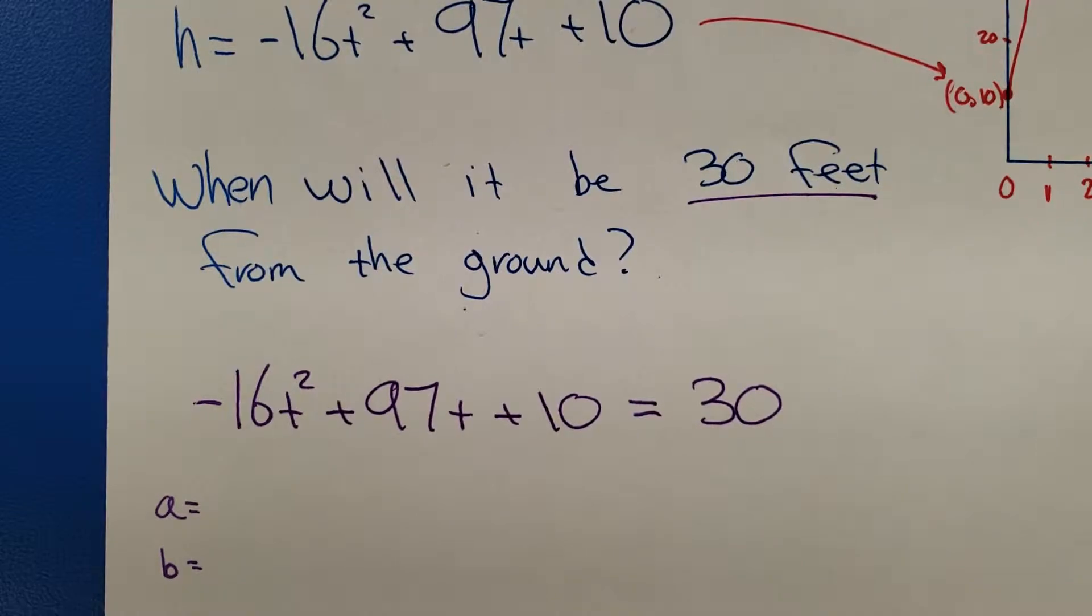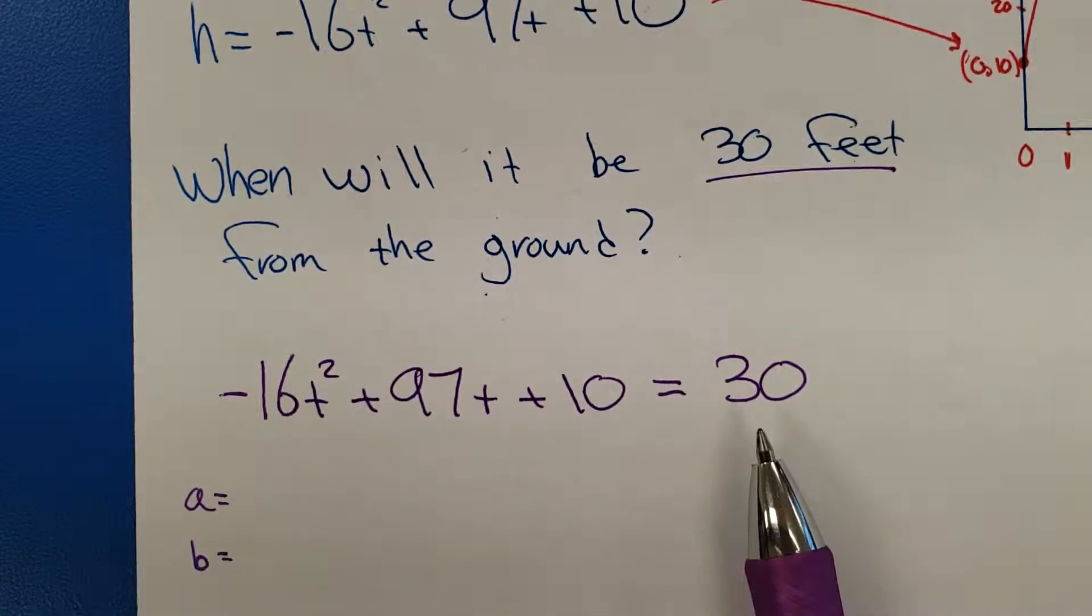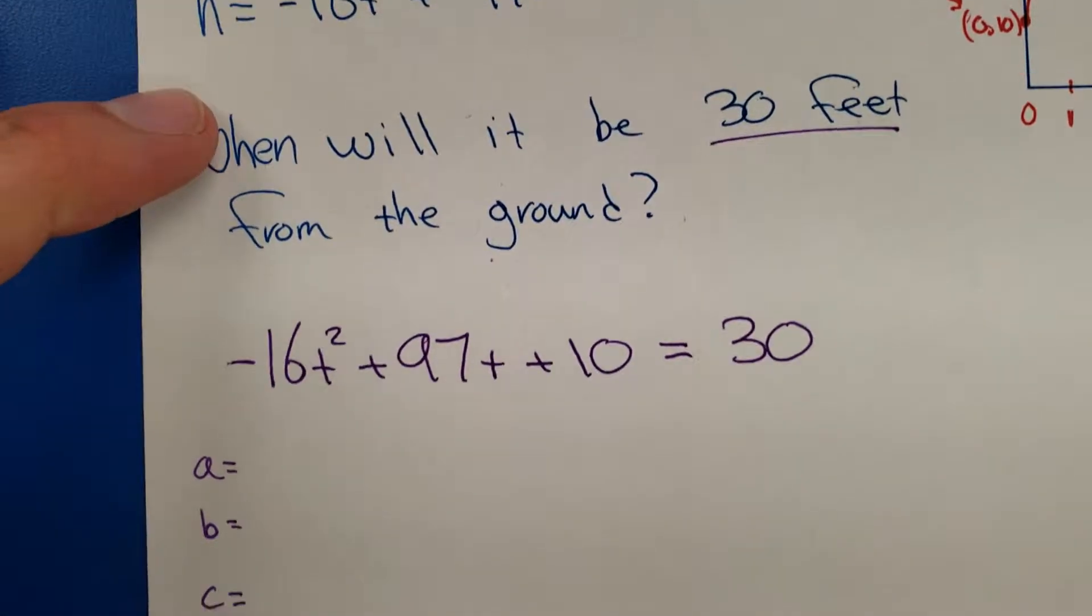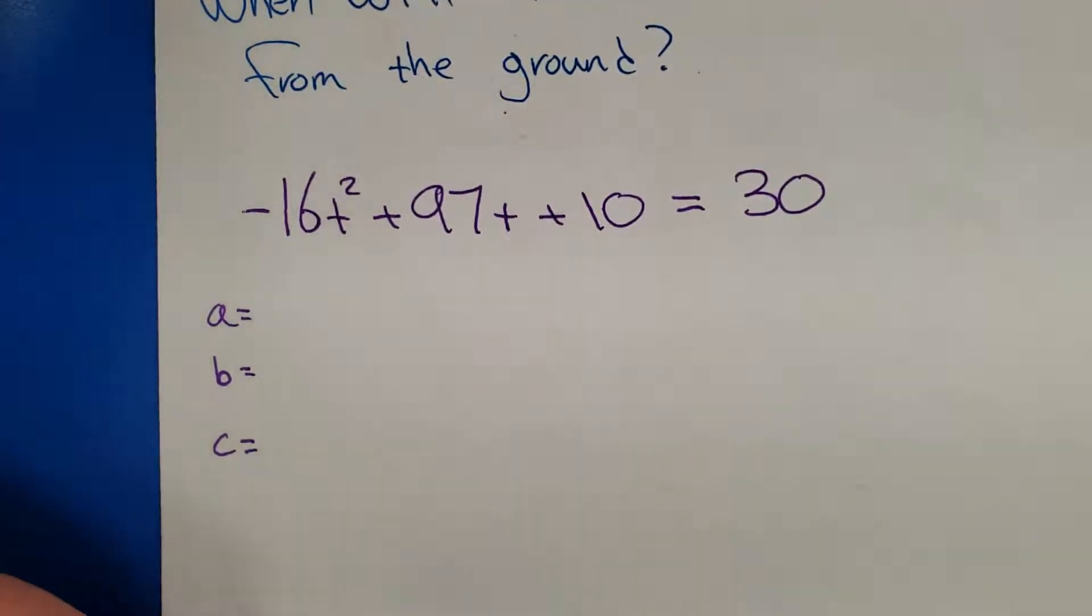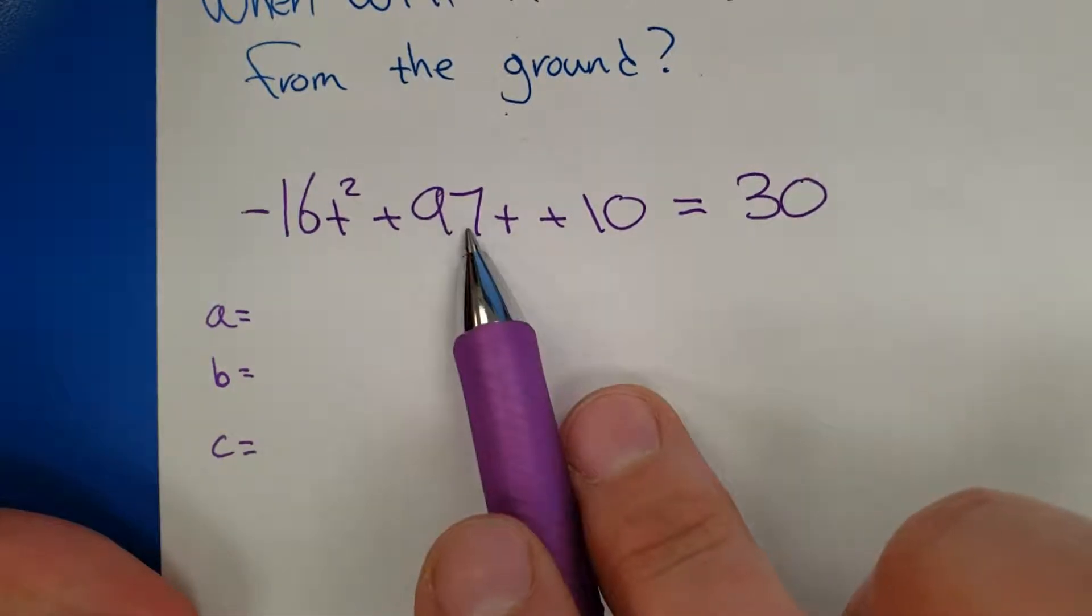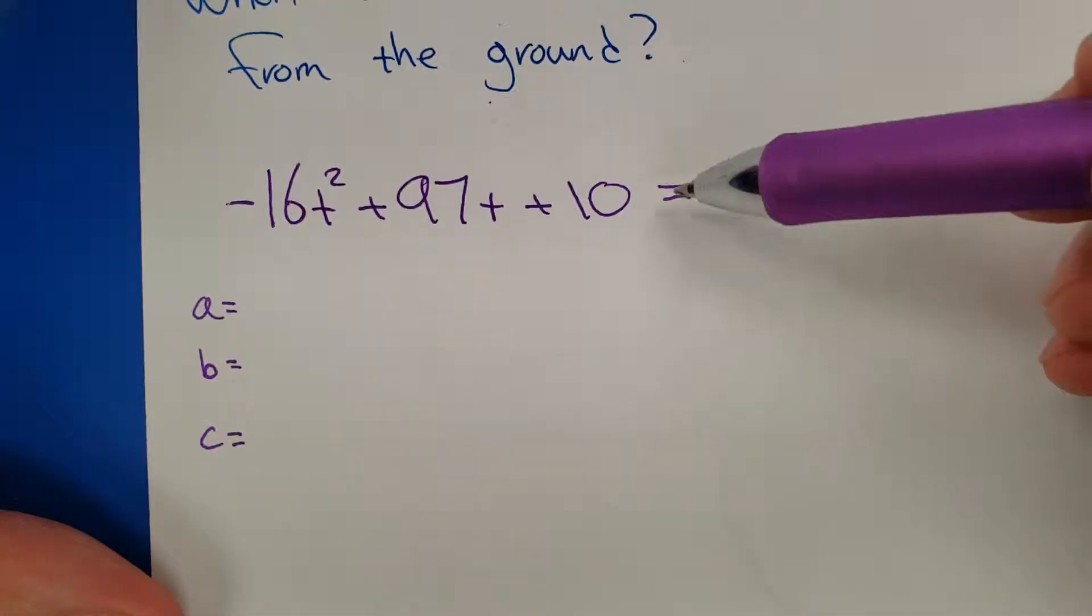So here's what you do mathematically. You literally set the gravity function equals to 30, and then you do the quadratic formula. So here we go from scratch. You set the original gravity function, gravity, initial velocity, initial height, equal to the height you're aiming for. We're aiming for 30.